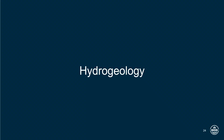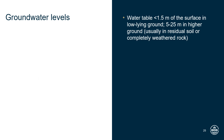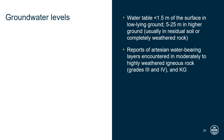In terms of bedrock hydrogeology, some groundwater can be found in nearly all geological units of Singapore, although the amount varies considerably. In low-lying areas the water table may be within 1.5 metres of the surface; on higher ground it is found between 5 and 25 metres. Groundwater levels will also fluctuate in response to rainfall, and in coastal areas and near the mouths of major rivers there may also be a tidal influence. There are also reports of artesian water-bearing layers encountered in moderately to highly weathered igneous rocks and in the superficial deposits of the Kallang group.